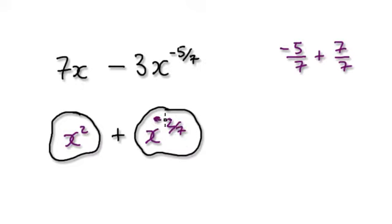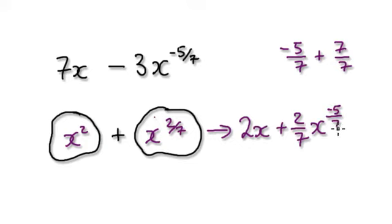So when you differentiate, our guess here should be x to the power of 2 over 7. Now, when you differentiate it, this thing here would be 2x. When you differentiate this here, it would be plus 2 over 7x. And then this thing here gets minus by 1. So it would give you minus 5 over 7.